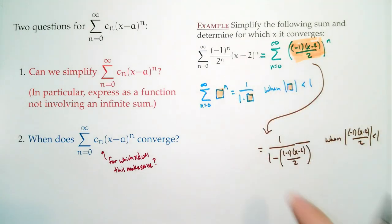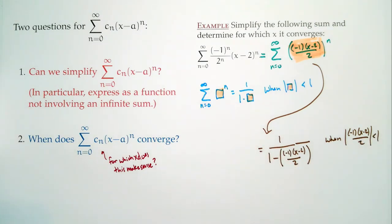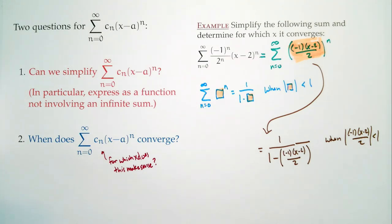Applying what we know about geometric series, we get the conclusion: this equals 1 over (1 minus [negative 1 times (x minus 2) over 2]), when the absolute value of [negative 1 times (x minus 2) over 2] is less than 1. It still applies because one of the big themes in mathematics is let's change what we call things. If we do that, it really gives us a lot of power.